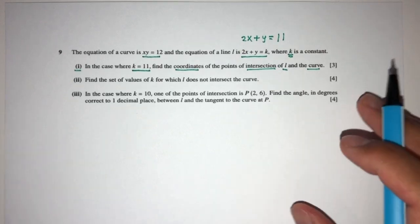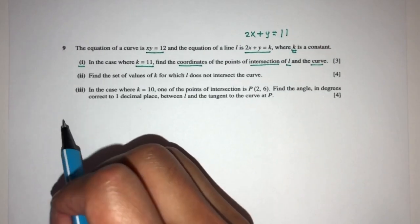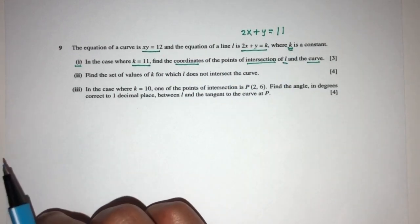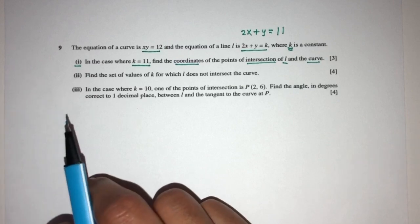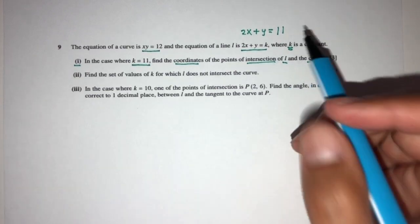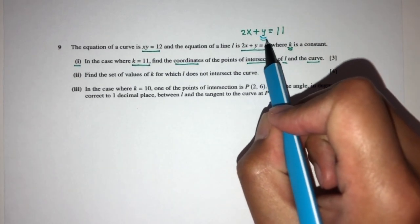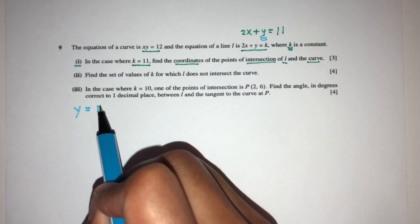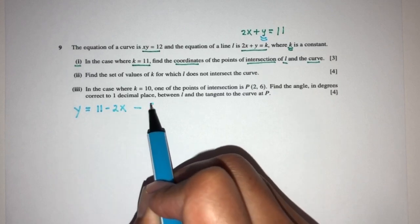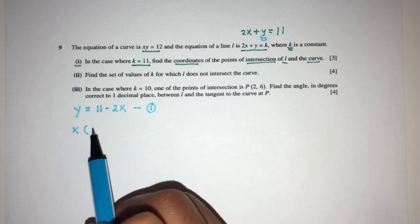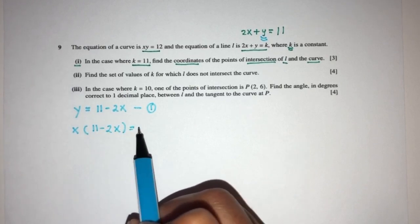Intersection means we have to solve a simultaneous equation. They ask how do I know which one to make the subject first — it depends on which you find easier. Here I find y easier than x, so I'll make y the subject. y is equal to 11 minus 2x — that is equation number 1. Now substituting into xy equals 12: x times (11 minus 2x) equals 12.